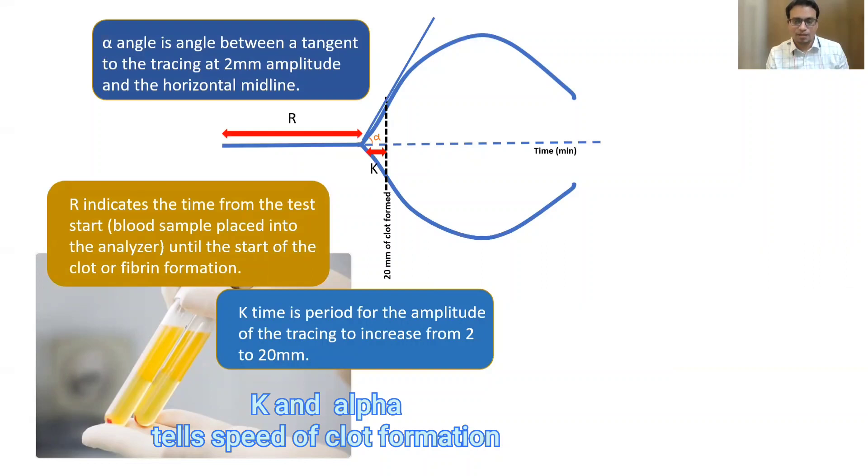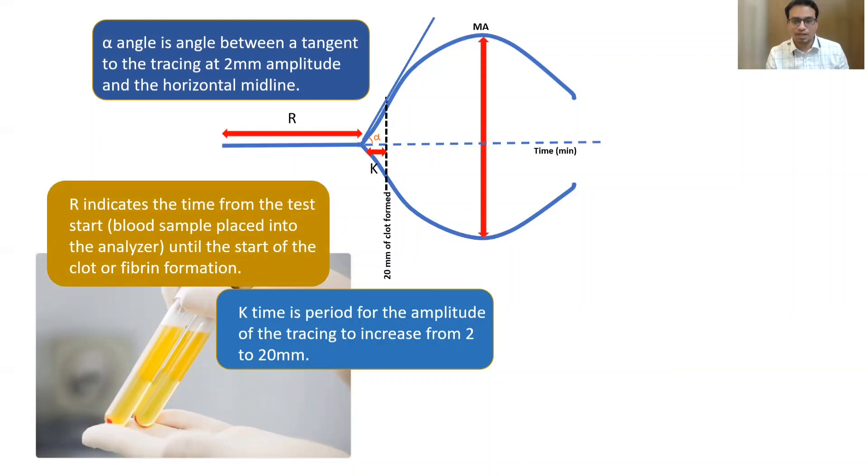Otherwise, a measure of crosslinking. Later the clot continues to form and reaches to a maximum diameter, that is called maximum amplitude on this tracing. After this point onwards, the clot doesn't thicken anymore and it starts rather lysing or degrading, and the pin movement slows down in the amplitude.